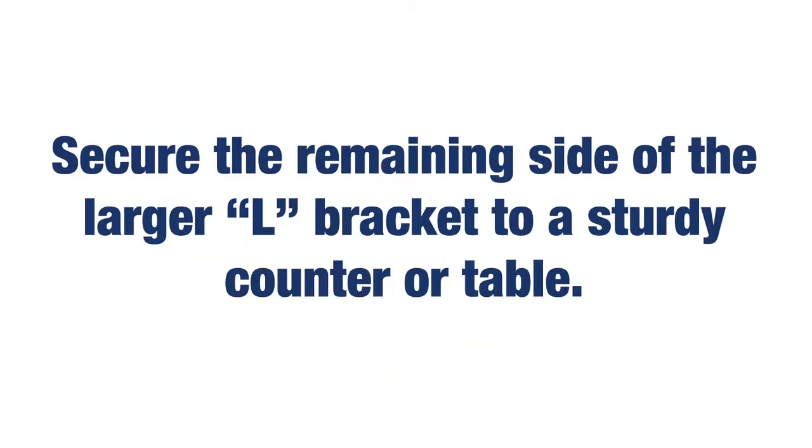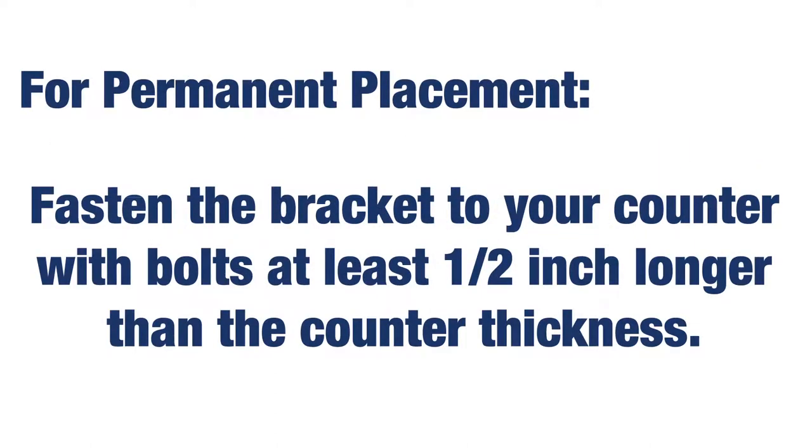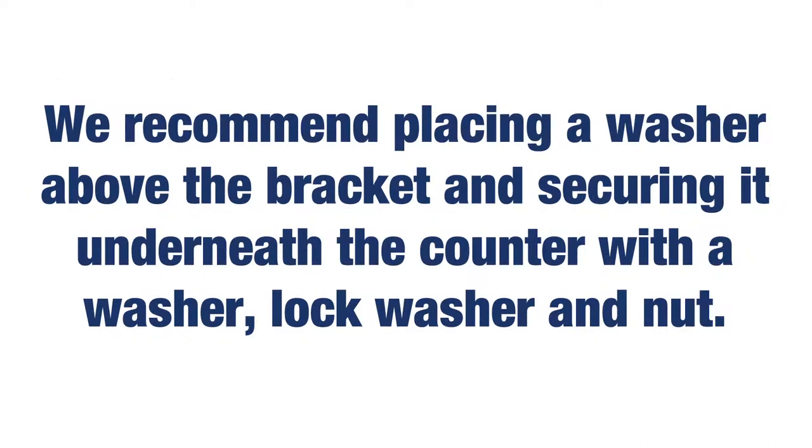Secure the remaining side of the larger L bracket to a sturdy counter or table. For permanent placement, fasten the bracket to your counter with bolts that are at least a half inch longer than the counter thickness. We recommend placing a washer above the bracket and securing it underneath the counter with a washer, lock washer and nut. Note that these items are not included in the Cook Chill assembly.